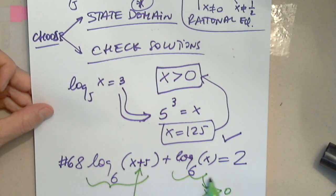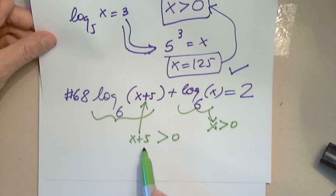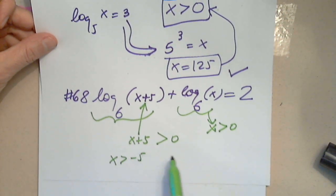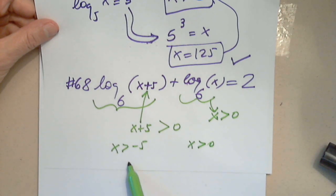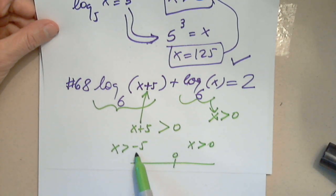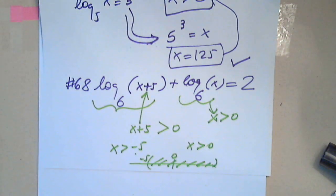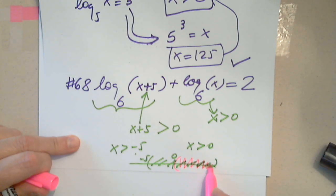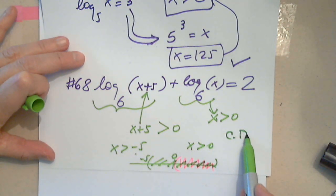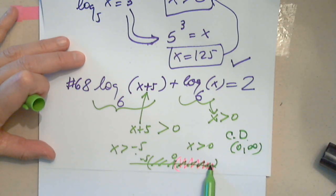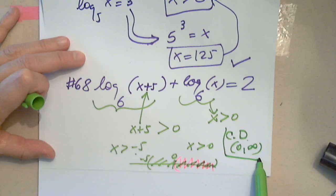I'm interested in the domain of this sum of functions. This one says greater than negative 5 and this one says greater than 0. On the real line, I have between negative 5 and infinity and I have between 0 and infinity. But I need both functions to exist at the same time. So the common domain is 0 to infinity, the common domain.